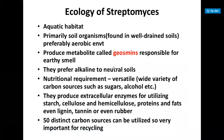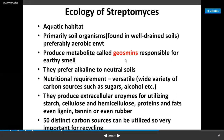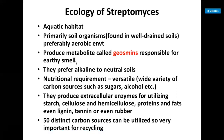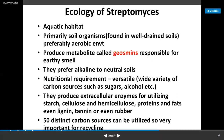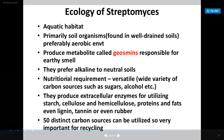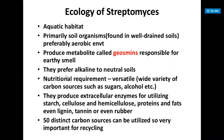Ecology of Streptomyces: they are primarily terrestrial in nature but are also found in aquatic environments. They produce a metabolite called geosmin, which is responsible for the earthy smell of ploughed soil. They prefer alkaline conditions. Their nutritional requirements include a variety of carbon sources - they produce extracellular enzymes for utilizing starch, cellulose, hemicellulose, protein, pectin, and lignin as distinct carbon sources.